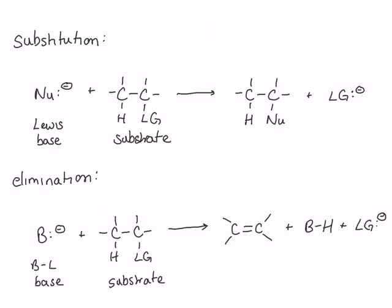The products differ because in the nucleophilic substitution reaction, we have substituted the nucleophile, or Lewis base, for the leaving group on the substrate. In the elimination reaction, we've removed a proton and the leaving group using the Bronsted-Lowry base to give us a new pi bond. You should be able to tell the difference between these two reactions by recognizing the difference in the products.